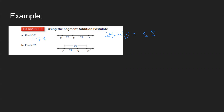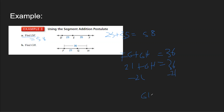For GH: FG plus GH is equal to 36, and you know that FG is 21. So 21 plus GH equals 36. If you subtract 21 on both sides, you get GH is equal to 15.